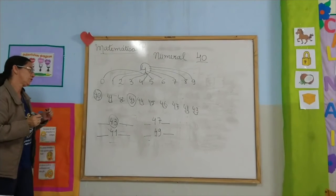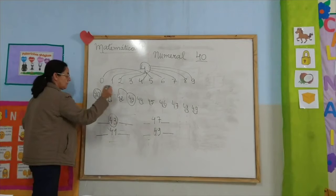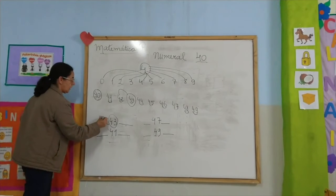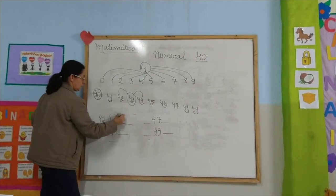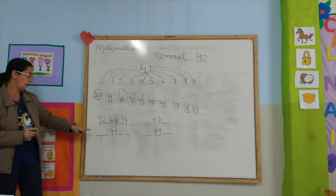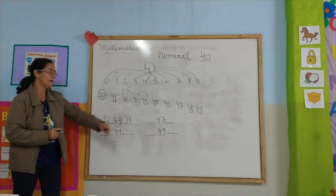Então, vamos ver os vizinhos de 43. Um vem antes: quem vem antes, 42. Quem vem depois, 44. Vamos conferir: 42, 43, 44.